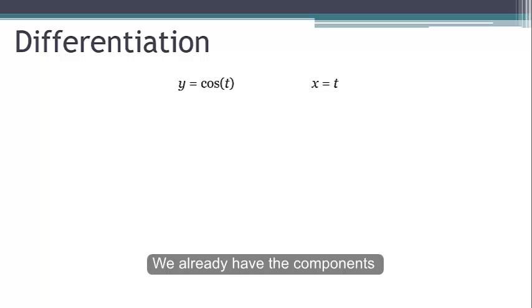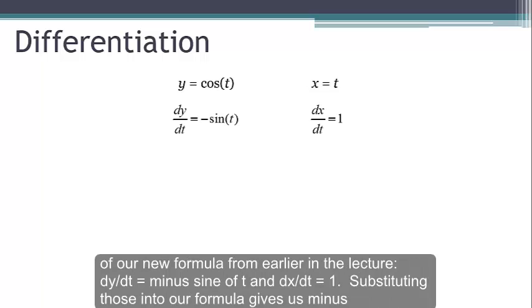All right, so we already have the components of our new formula from earlier in the lecture. dy/dt equals minus sine of t, and dx/dt equals one.